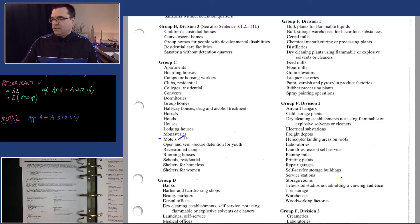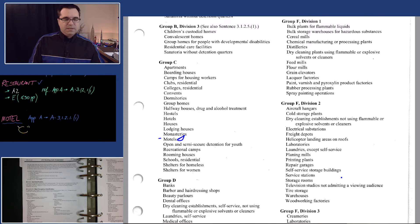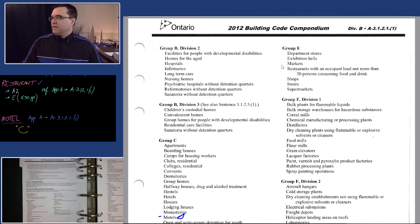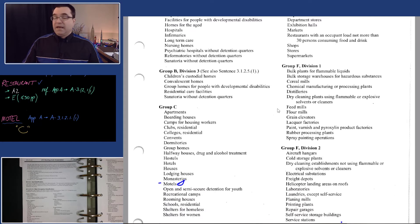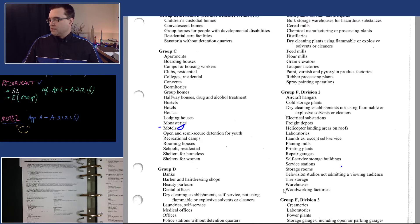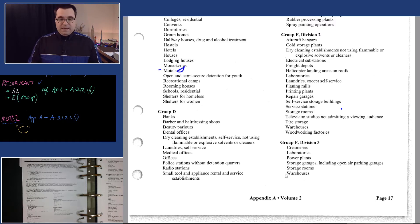Under C — found something for motels! So C is a possibility. I'm going to make a note of that on my tablet in a slightly different color. Let's continue: D — no. E — no. F1 — no. F2 — no. F3 — no. It looks like the only choice we have is C for motels.